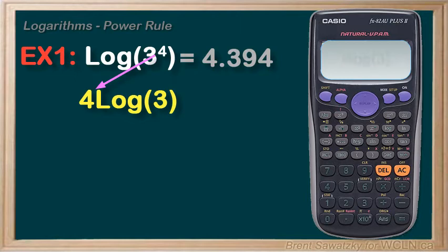If we plugged this into our calculator, we'd enter four times log of three, and we would also get 4.394 rounded again. Confirmed.